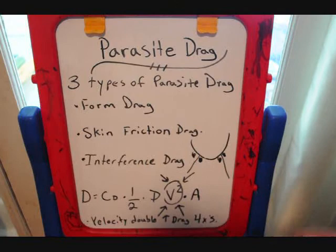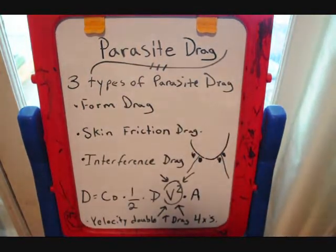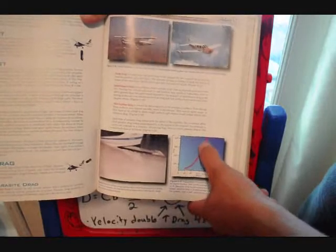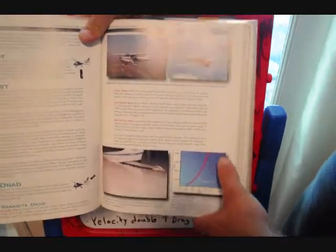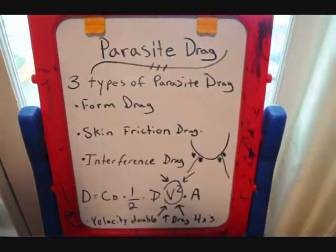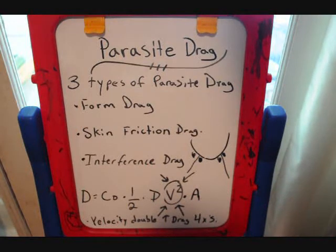And when you look at a drag curve, you see it's a parabolic arc — see this red line? That's the drag curve. So if you go from 100 knots to 200 knots, you've increased your drag four times. That's all you need to know about parasitic drag.